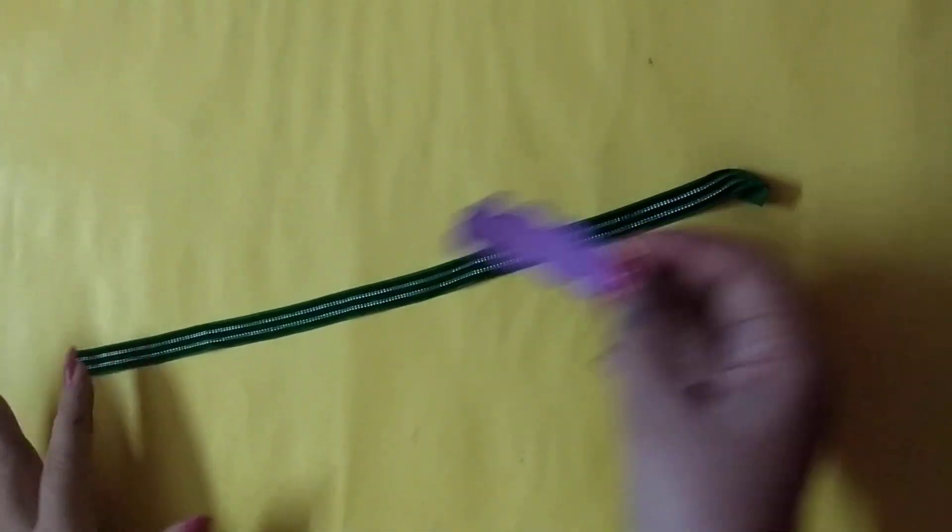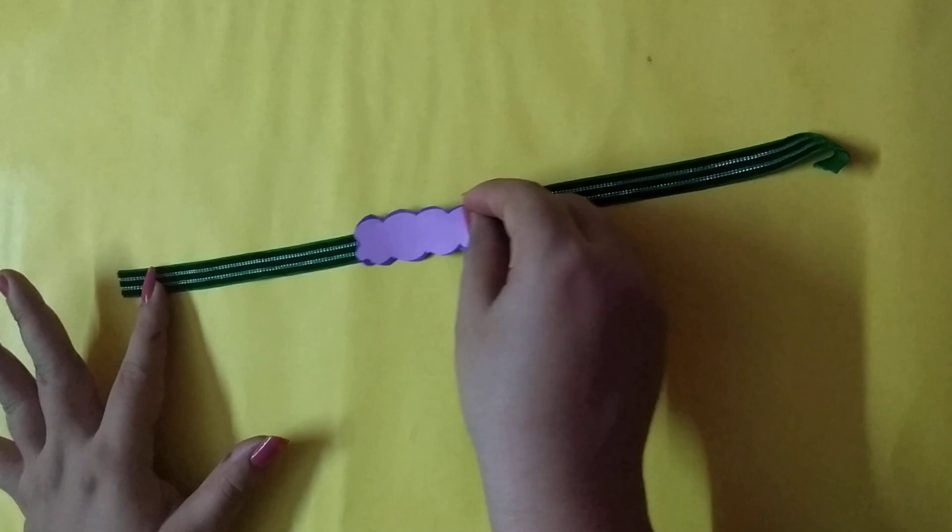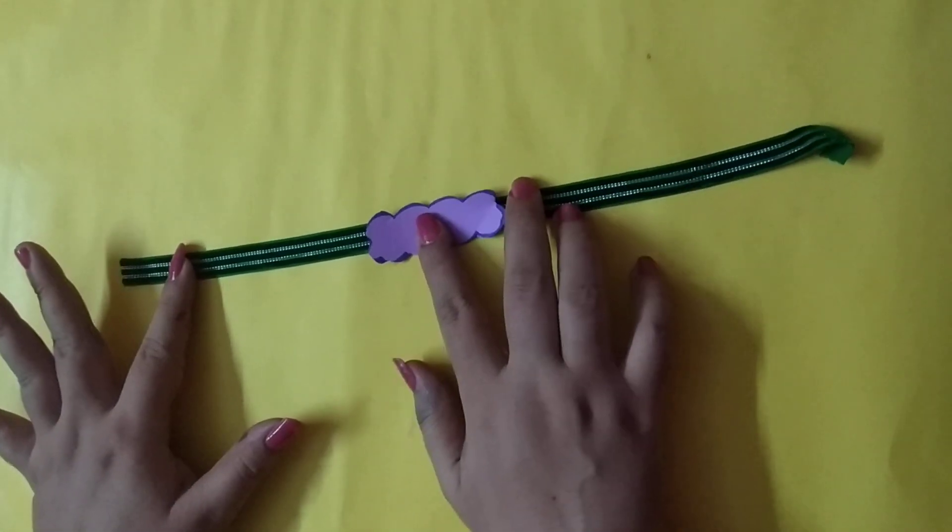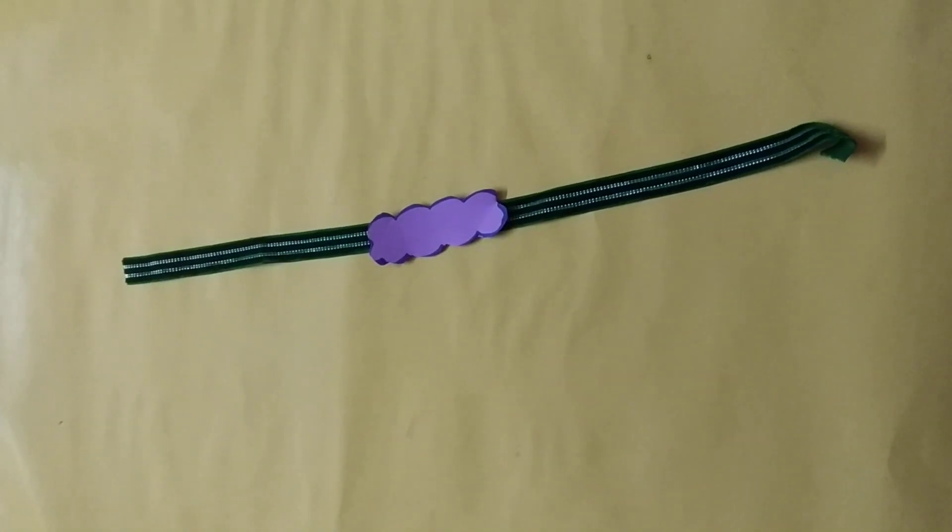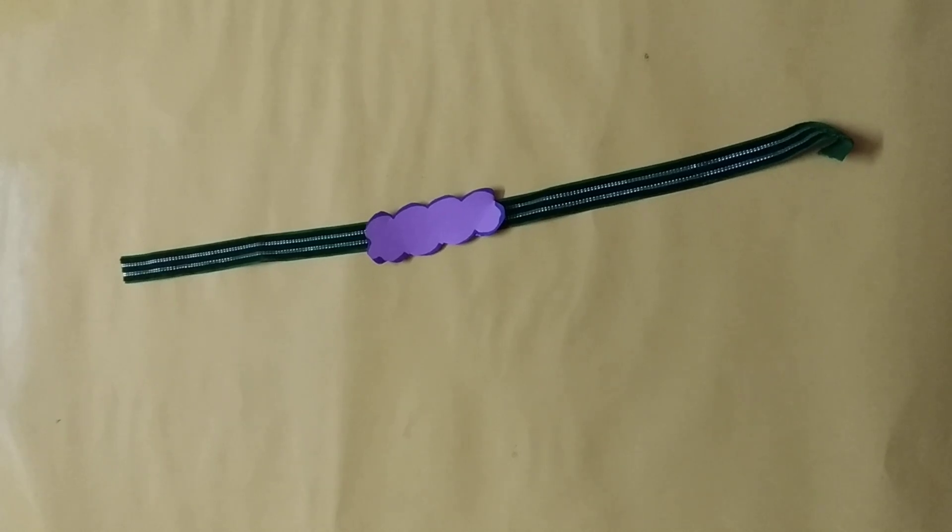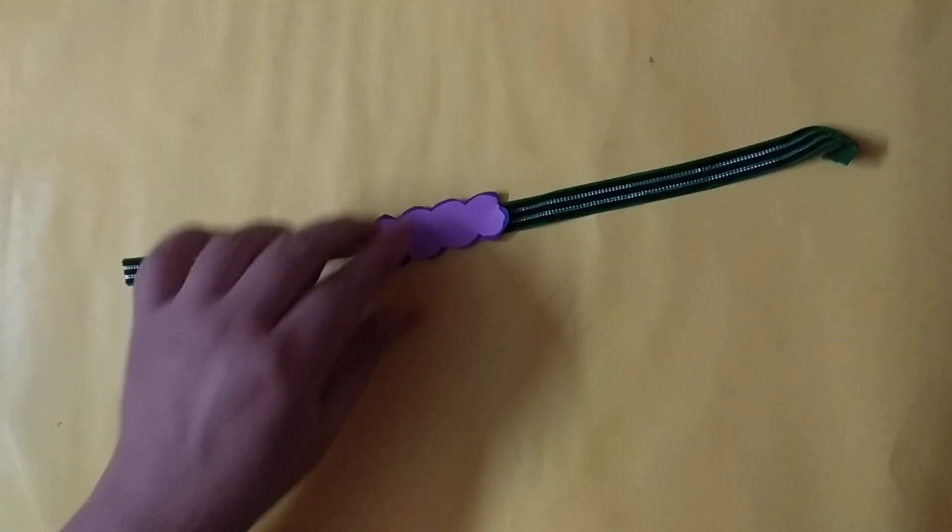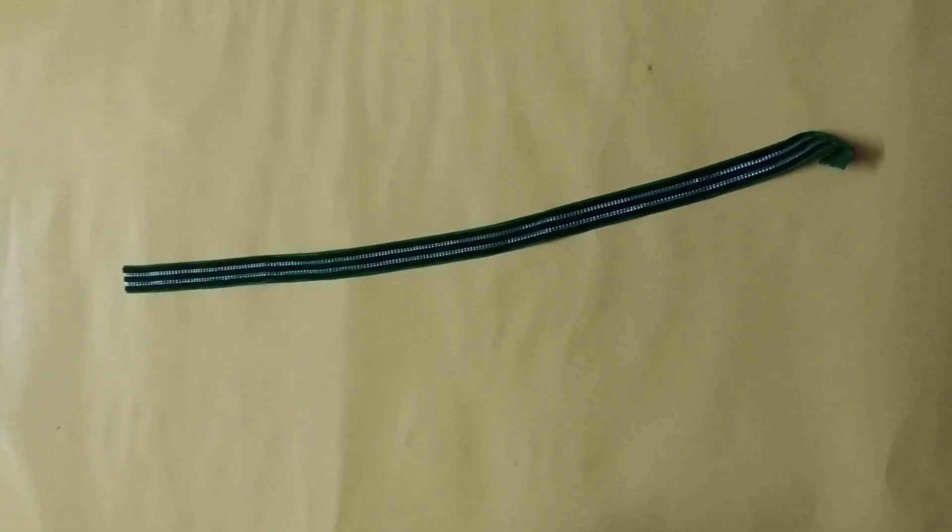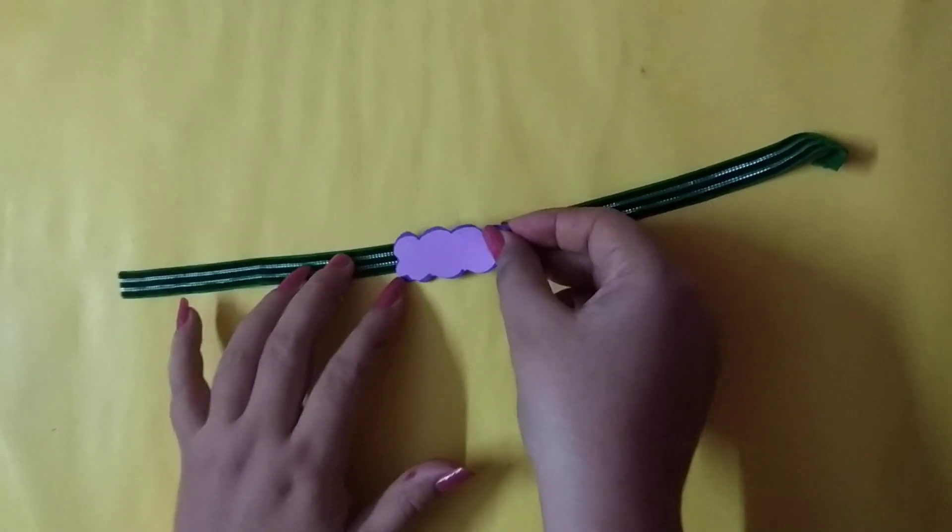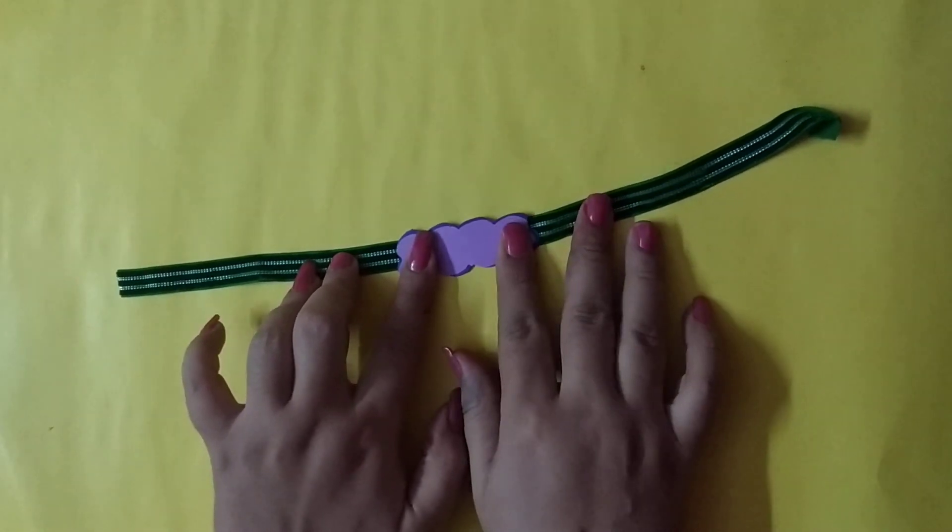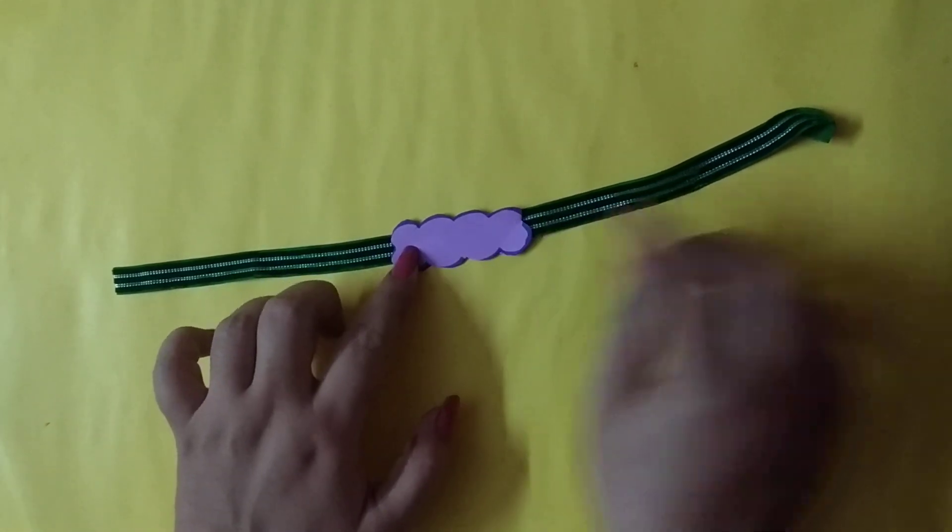So after cutting this shape, we will paste here in the middle. We have to paste with Fevicol or Fevistick. Anything you can use. So nicely you have to paste it here. So now we will decorate this part.